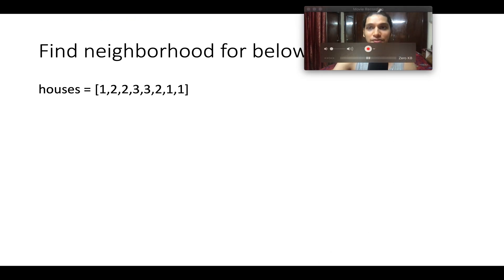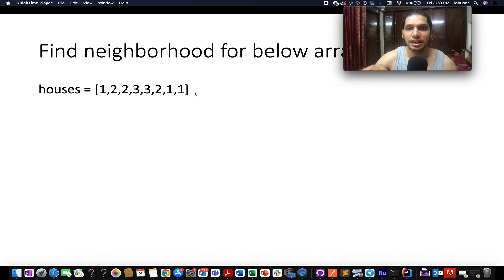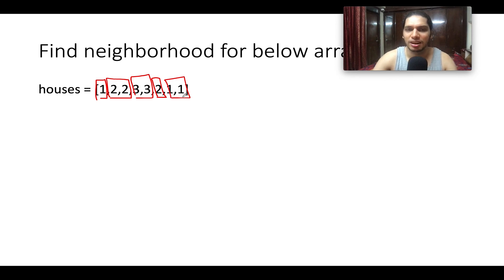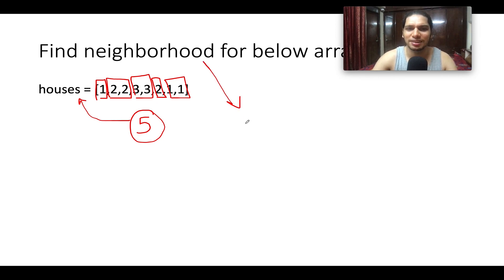Now let's understand the definition of neighborhood: find the neighborhood for the below array. I have taken a sub-problem out of the question — how do you define a neighborhood? It's the number of consecutive groups that are formed. Here we have a group where the house is painted with color 1, the next group painted with color 2, then color 3, then color 2, and then color 1. So in total, 5 groups are formed. As per this array configuration, the neighborhood comes out to be 5.